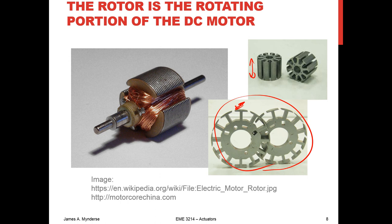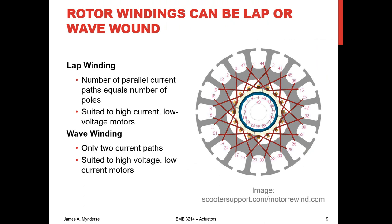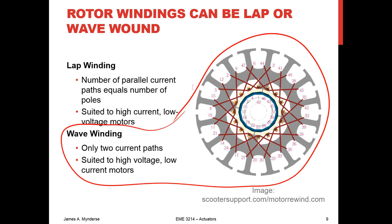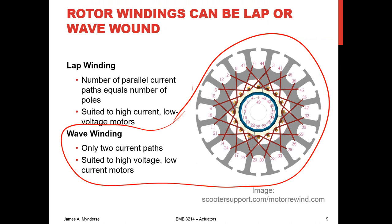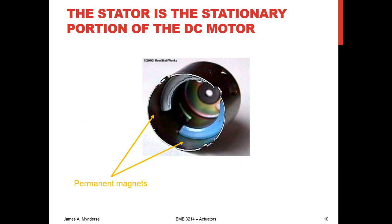The coils of wire can be either lap or wave wound. In lap winding, there are as many parallel current paths as there are poles. In wave winding, there are only two, with much more complicated paths. Lap winding gives high current, low voltage motors. Wave winding gives high voltage, low current. It depends on the wire choice you use, how much wire you have, and your resistive heating.